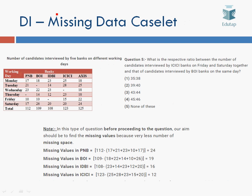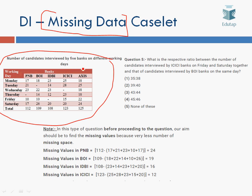In missing data type questions, a caselet is given with missing values indicated by dashes. The key to solving such questions is to first find the missing values and then answer the questions that follow.